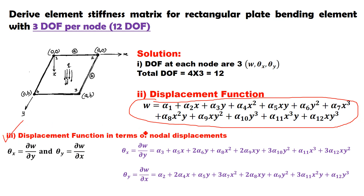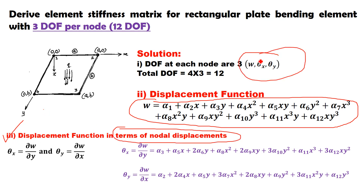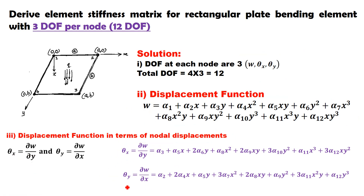Step 3 is to express the displacement function in terms of nodal displacements. The nodal displacements are W, θx, and θy. We have already written W. The remaining two are θx = ∂W/∂y and θy = ∂W/∂x. Differentiating the W polynomial with respect to y: when differentiating with respect to y, x is treated as constant. Therefore, the terms α1 and α2·x yield 0.